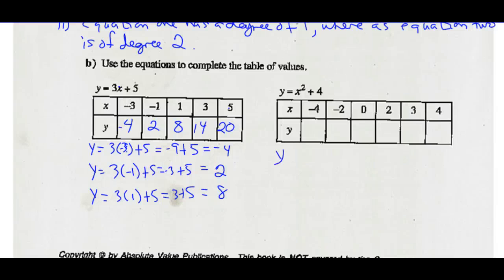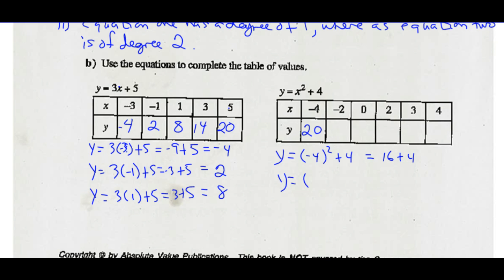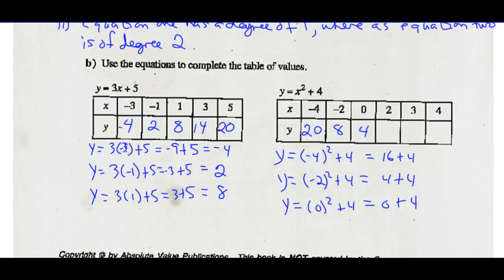The same thing over here — simply substitute into the equation. Everywhere I see an X, I put in the values for X. When X is negative 4, negative 4 squared is 16 plus 4, so Y is 20. When X is negative 2, 2 squared is 4 plus 4 is 8. When X is 0, 0 squared plus 4 is 0 plus 4, which is 4. When X is 2, 2 squared is 4 plus 4 is 8. 3 squared is 9 plus 4 is 13. 4 squared is 16 plus 4 is 20. That's how you complete the table of values.